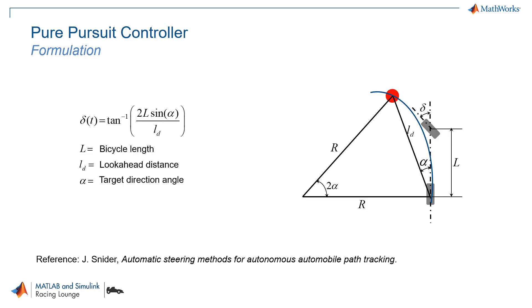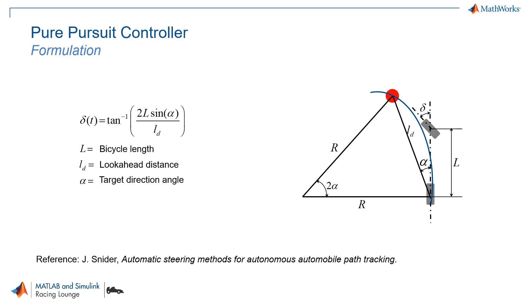This is the formula for calculating the wheel steering angle, where L is the bicycle length, LD is the lookahead distance, and alpha is the target direction angle. The same can also be seen in the figure.